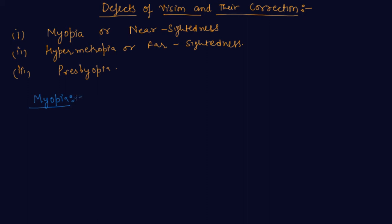In this defect, also known as nearsightedness, a person with myopia can see nearby objects clearly but cannot see distant objects distinctly.